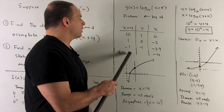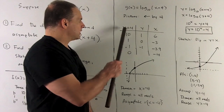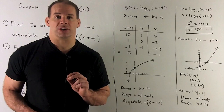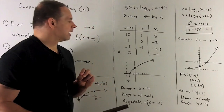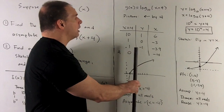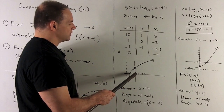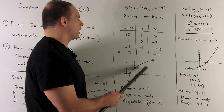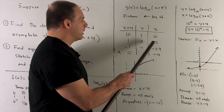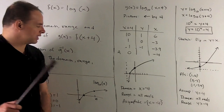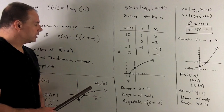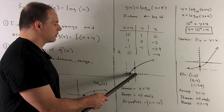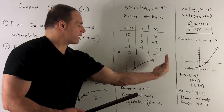Also, our asymptote was at x = 0. So if I have x = 0, it's now x + 4 = 0, giving x = −4. The new asymptote is x = −4. In the picture, if the asymptote was here and I'm shifting everything left by 4, the asymptote goes from 0 to −4. I now have the point (6, 1), and the point (−3, 0) — on the original graph that was at 1, now shifted by 4 to −3. So the whole graph has shifted left by 4.